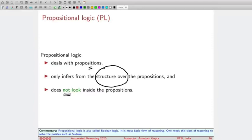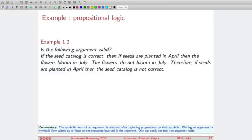Let's look at an example. Consider the following argument: If the seed catalog is correct, then if seeds are planted in April, then the flowers bloom in July. The flowers do not bloom in July. Therefore, if seeds are planted in April, then the seed catalog is not correct. Do you think this argument is correct or not? Please pause the video and try to reason yourself: is it valid or not?